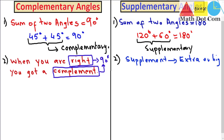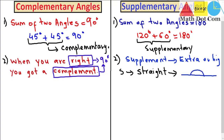You can also memorize it as: S is for supplementary, and S is for straight. In supplementary angles, you are making a straight angle. A straight angle is basically an angle equal to 180 degrees. If you draw a diagram, starting from one end to the other gives you 180 degrees — this is called a straight angle. So in supplementary angles, adding the two angles gives you a straight angle.